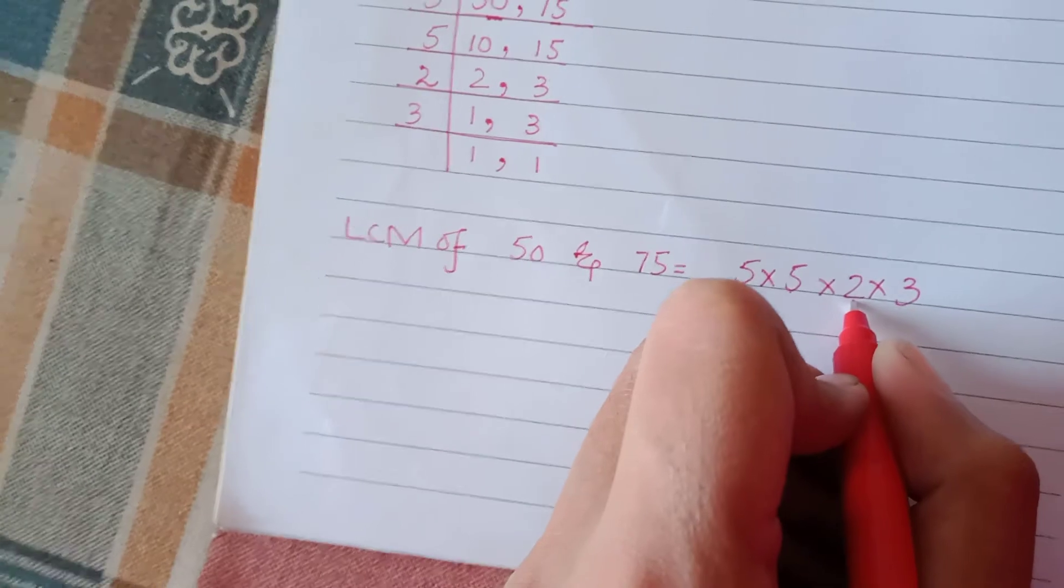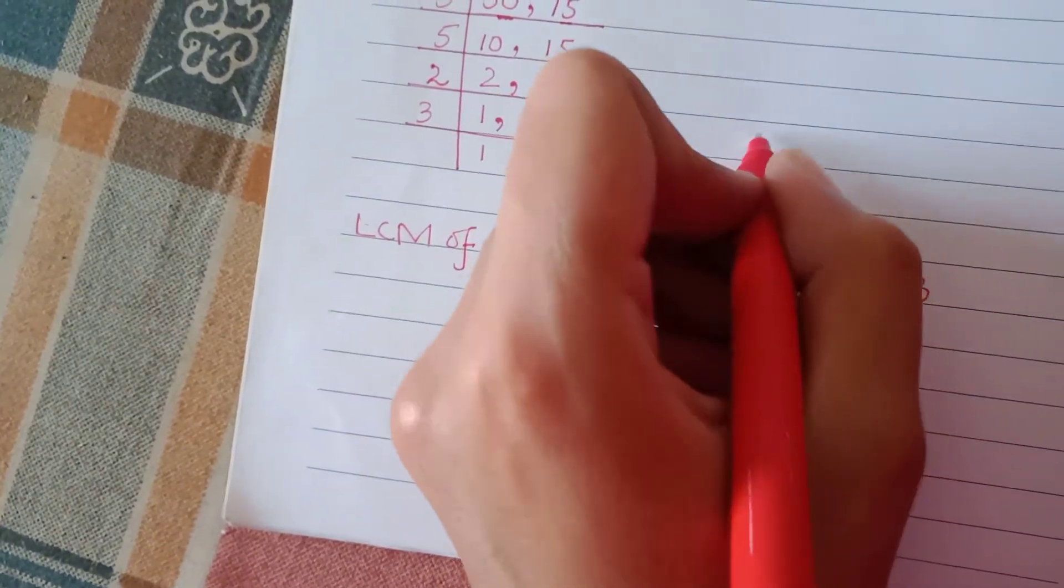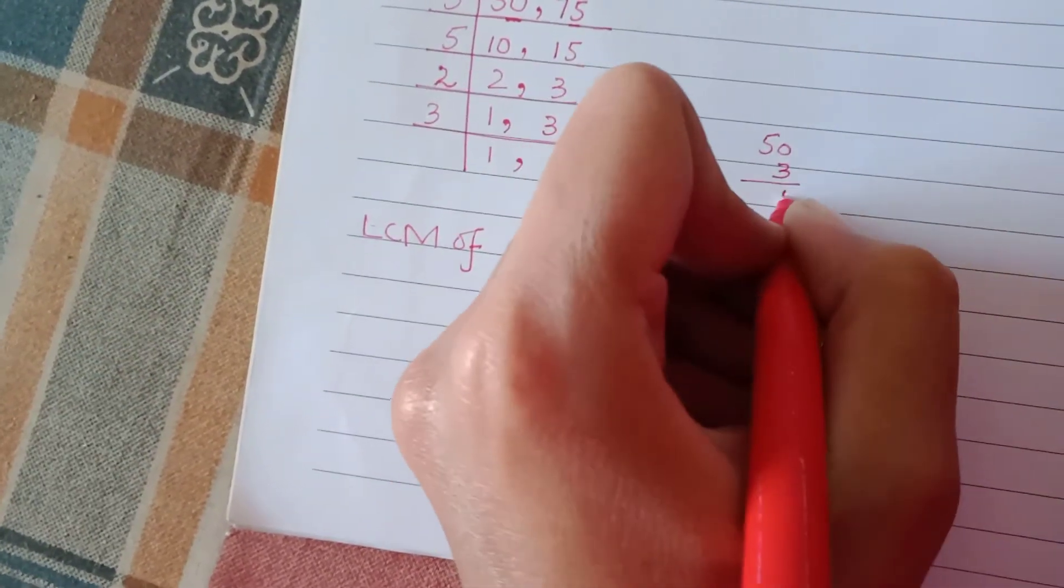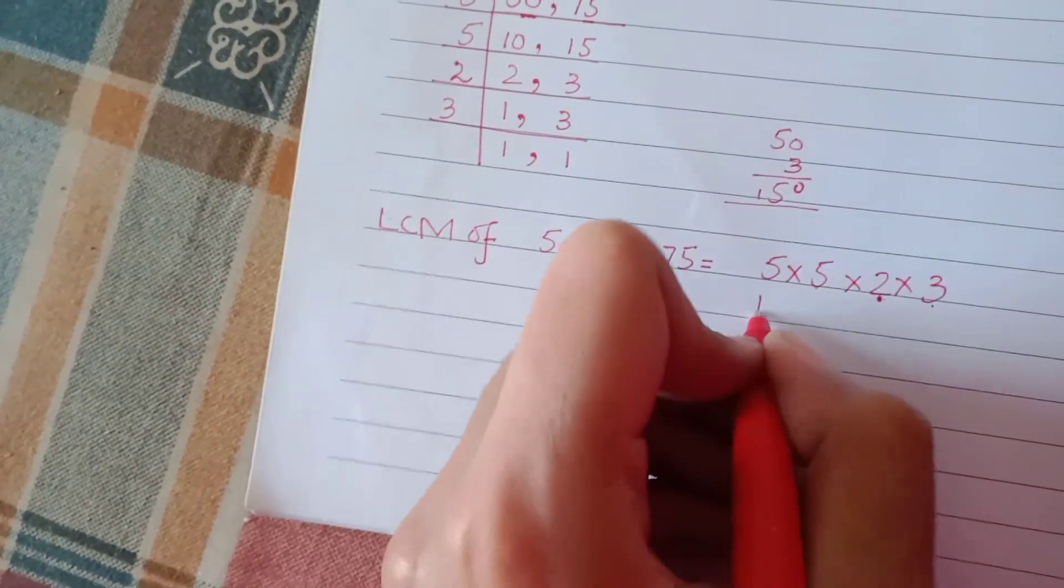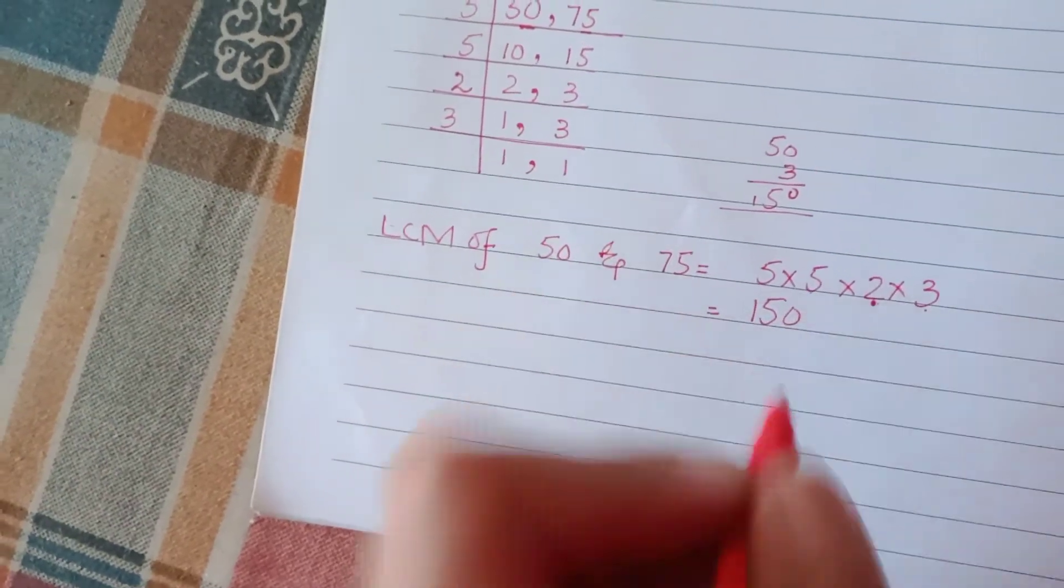25 times 2 is 50, and 50 times 3 is 150. So, the LCM will be 150.